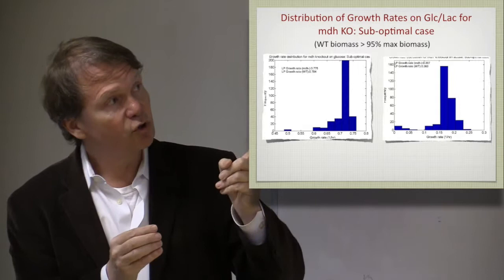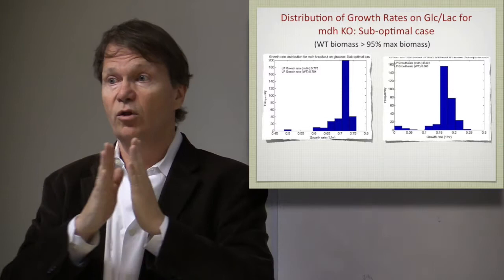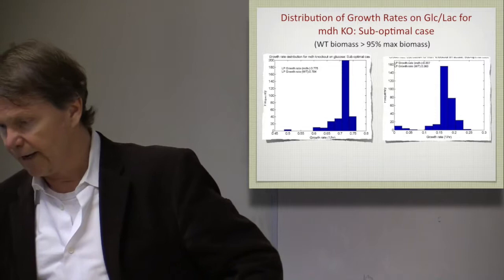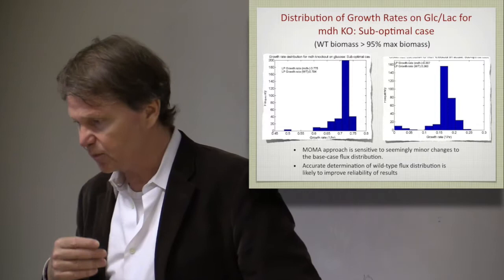And sometimes those histograms are narrow, which means that the prediction is kind of precise. Sometimes they may be wide. So those MOMA predictions may or not be that reliable. So that's an example of that.